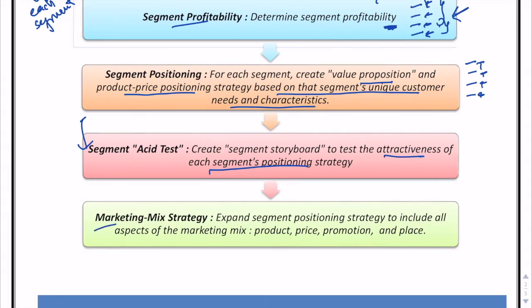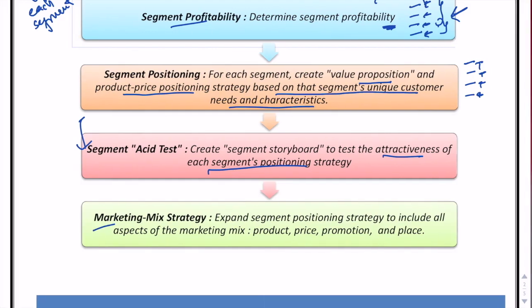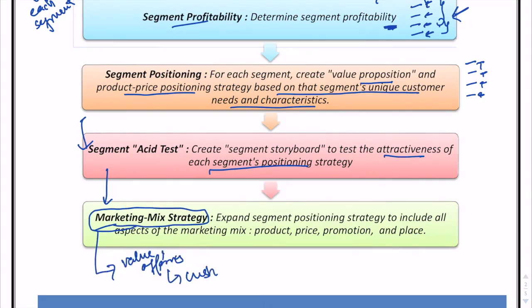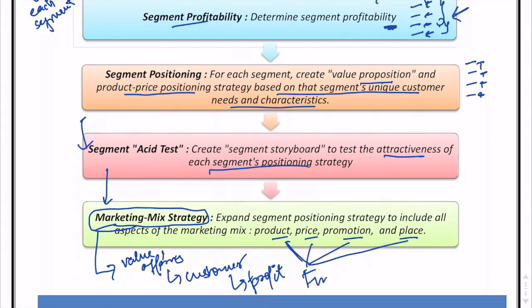After that comes the marketing mix strategy. Having tested the segments and corrected all errors, a final strategy is devised — a marketing strategy that helps the marketer provide the value offering to the customer and derive profit for the company. This expands the positioning strategy to include all aspects of the marketing mix: product, price, promotion, and place.